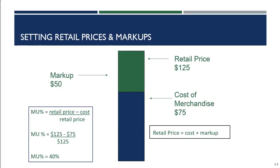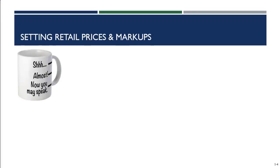Now, let's think about what would happen if we knew the cost of the merchandise and we knew our standard markup percentage and had to calculate what retail price to set. Let's say we are a novelty gift store. Novelty gift stores on average have a markup of about ninety-two percent — that's just the industry average, not store-specific. But on average, the gift, novelty, and souvenir store markup is ninety-two percent.